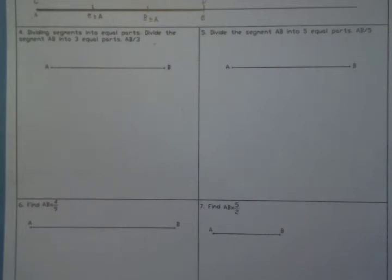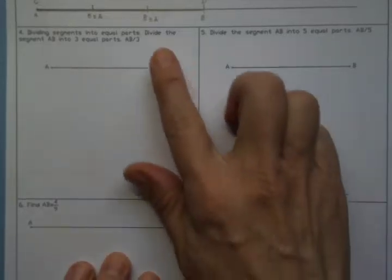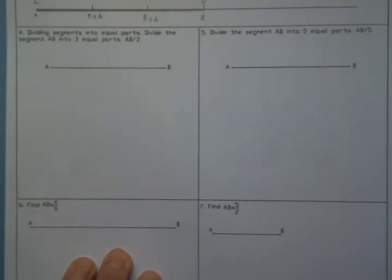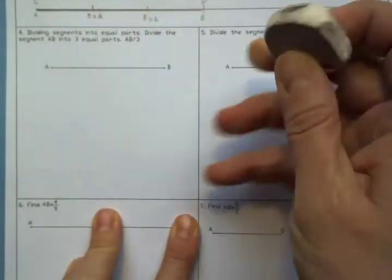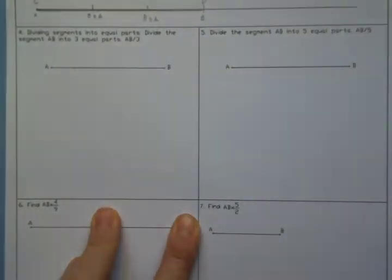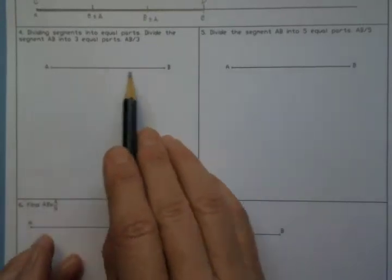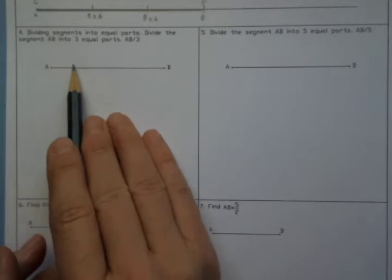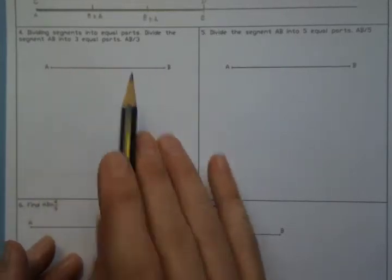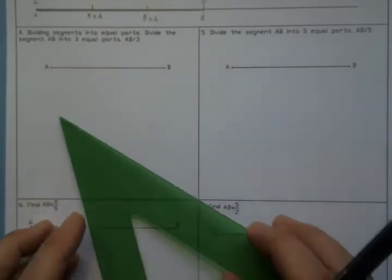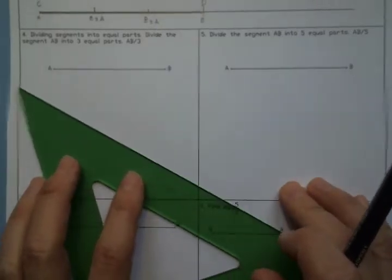Worksheet number two, exercise number four. Now we are going to learn how to divide a segment into three equal parts. Here we have a segment AB and we want to divide it into three parts, so we are going to apply Thales's theorem.